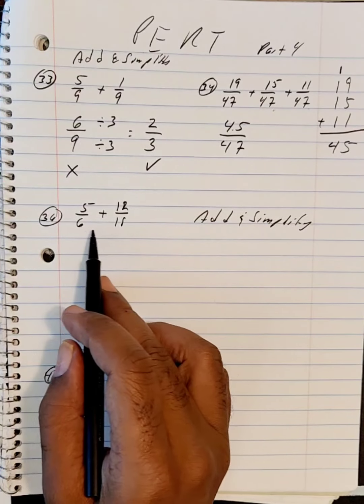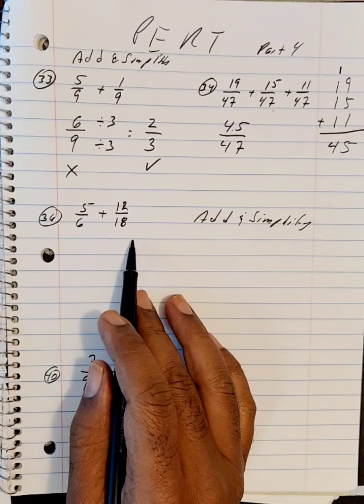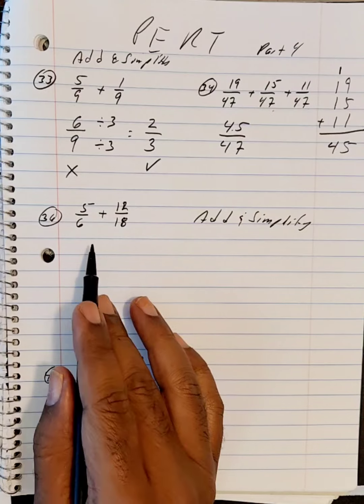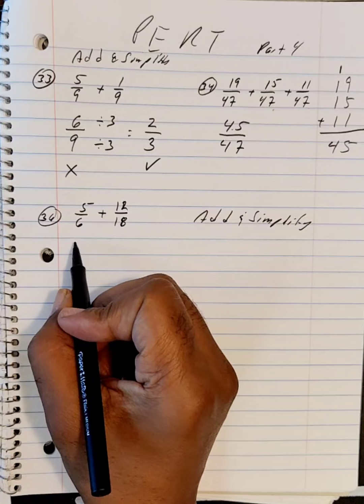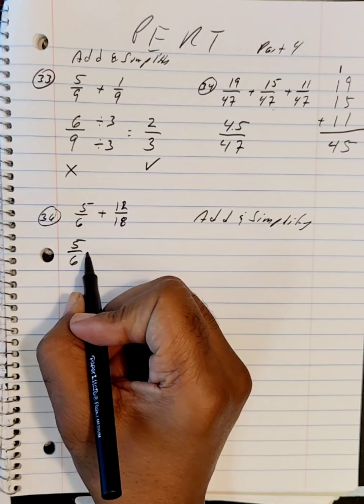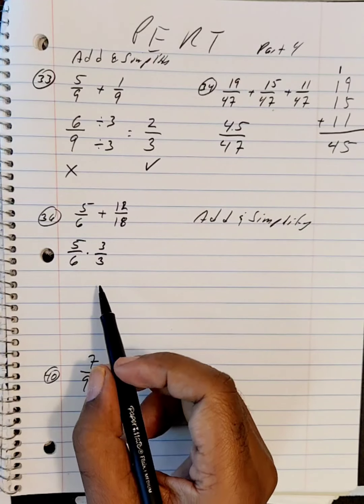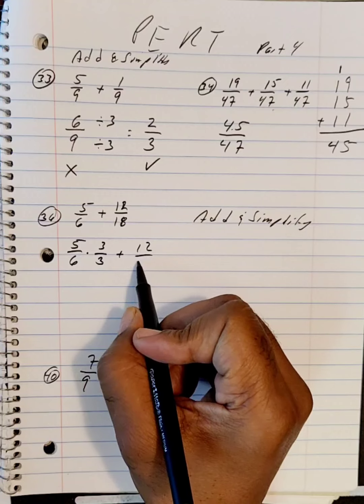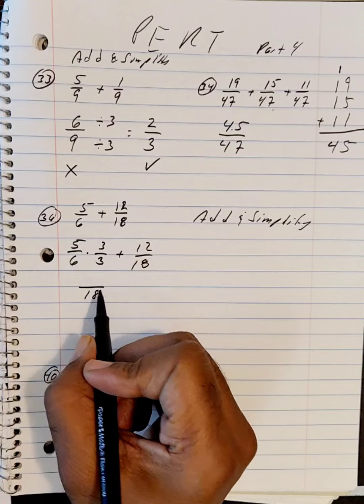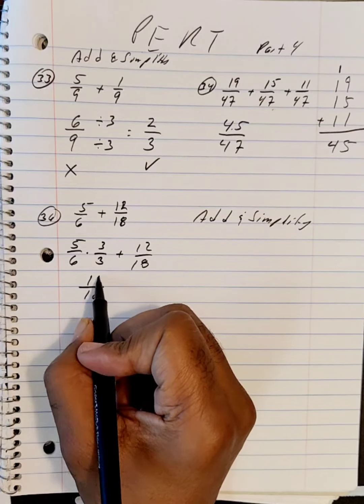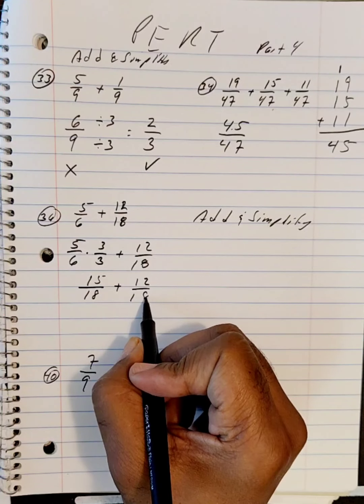Now, this is 12 over 18 added to 5 over 6. The denominators have to be the same. So I have an 18 and a 6. I want this 6 to become an 18, so what I'm going to do is multiply this by 3 over 3. And once that's done, I'll have the same denominators. So 6 times 3 together makes 18, but 5 times 3 makes 15.